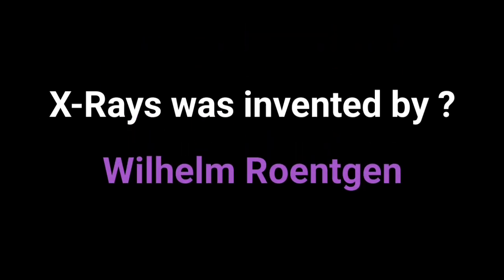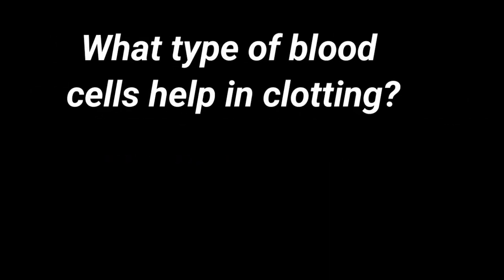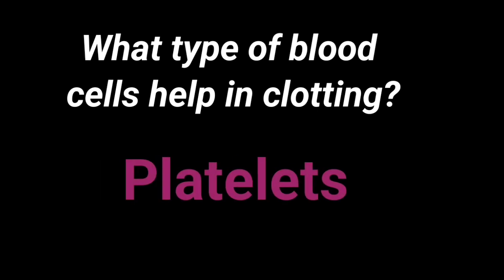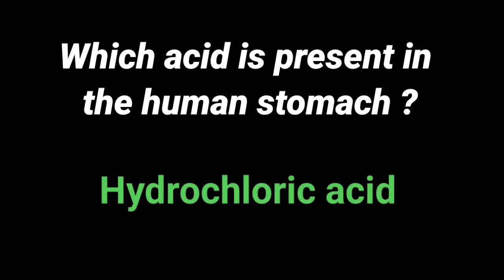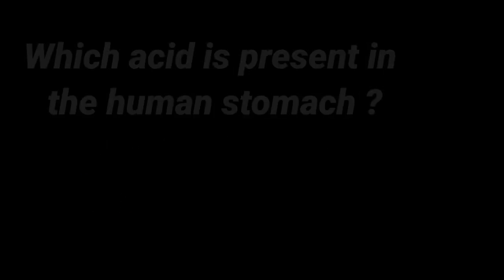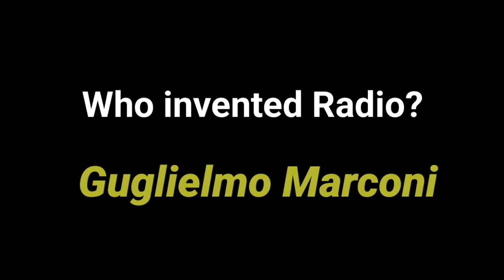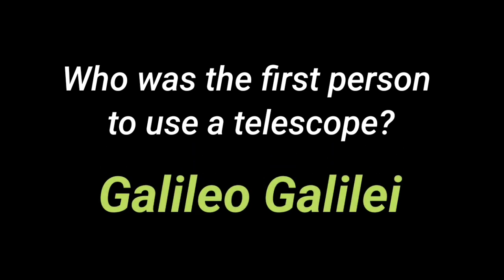X-rays were invented by Wilhelm Röntgen. What type of blood cells help in clotting? Platelets. Which acid is present in the human stomach? Hydrochloric acid. Who invented radio? Guglielmo Marconi. Who was the first person to use a telescope? Galileo Galilei.